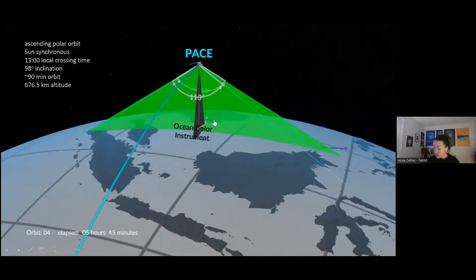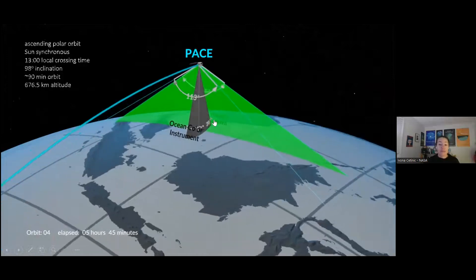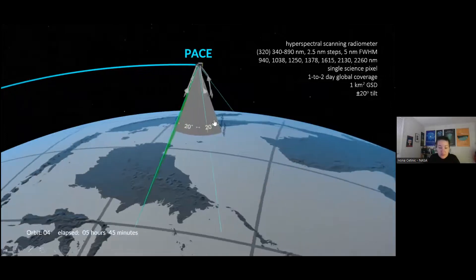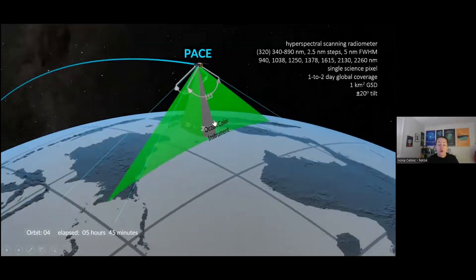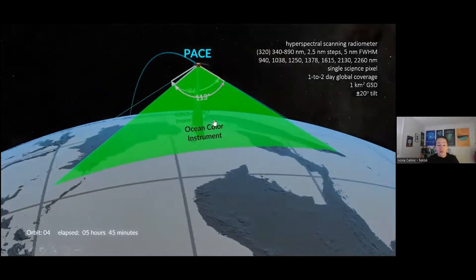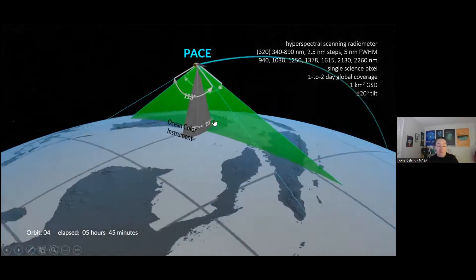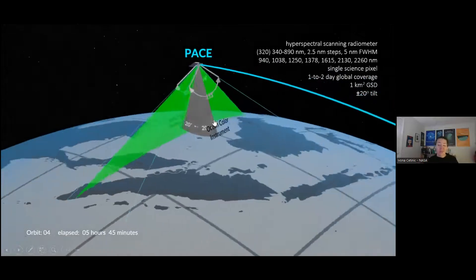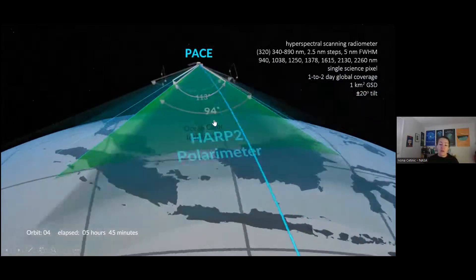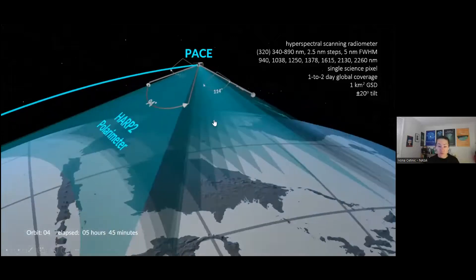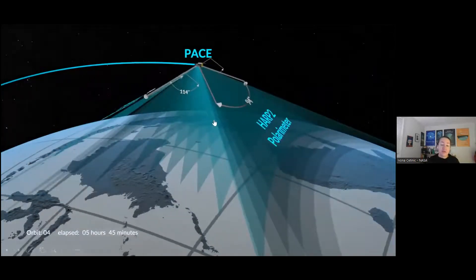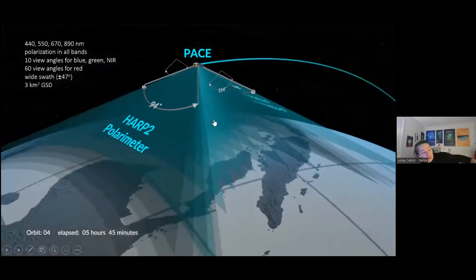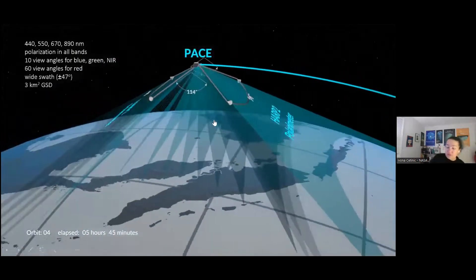And PACE is going to be carrying this ocean color instrument. As I said, from my perspective, that's really the most important instrument because that's the instrument that's going to be able to scan and take photos, in a sense, of ocean color, but all different colors. It's like switching from Nokia Pixel, the old school cell phone, to something that you probably have in your hands right now.